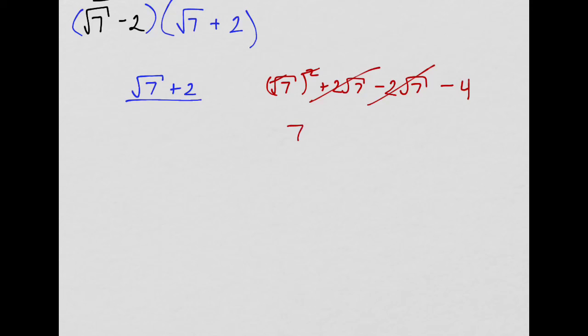This just becomes 7 minus 4, that's 3, I do believe. And now we have no more radical in the denominator. This is actually a good trick when you get to limits in calculus. So remember it.